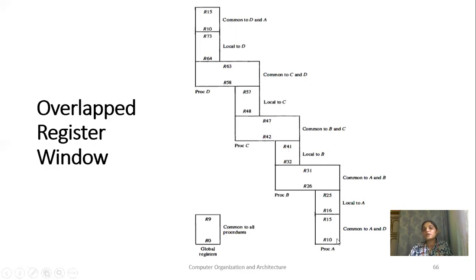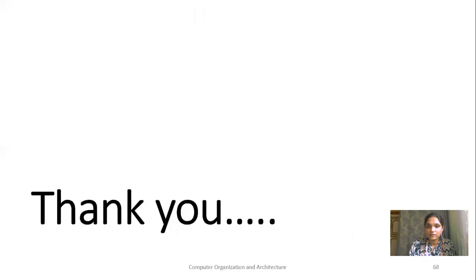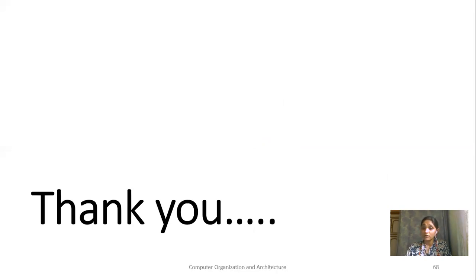By using this process, registers are divided into 4 windows: window A, window B, window C, and window D. This completes Unit 5, Central Processing Unit. In this unit we learned about instruction sets, interrupts, types of interrupts, subroutine calls, and RISC and CISC architecture.